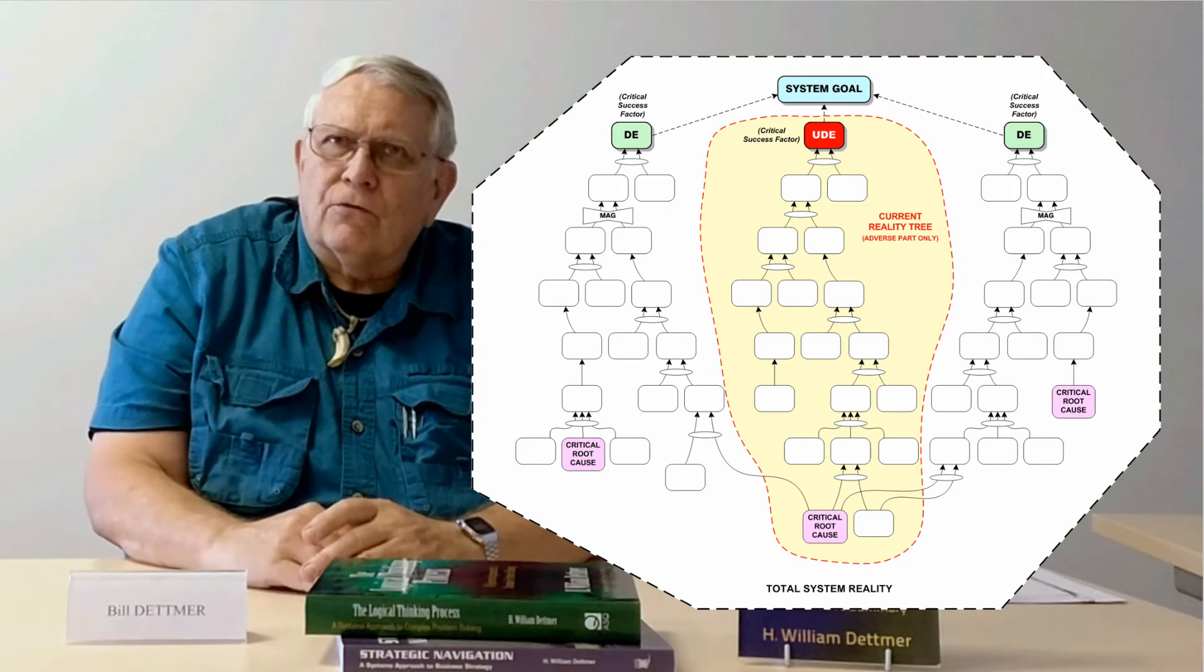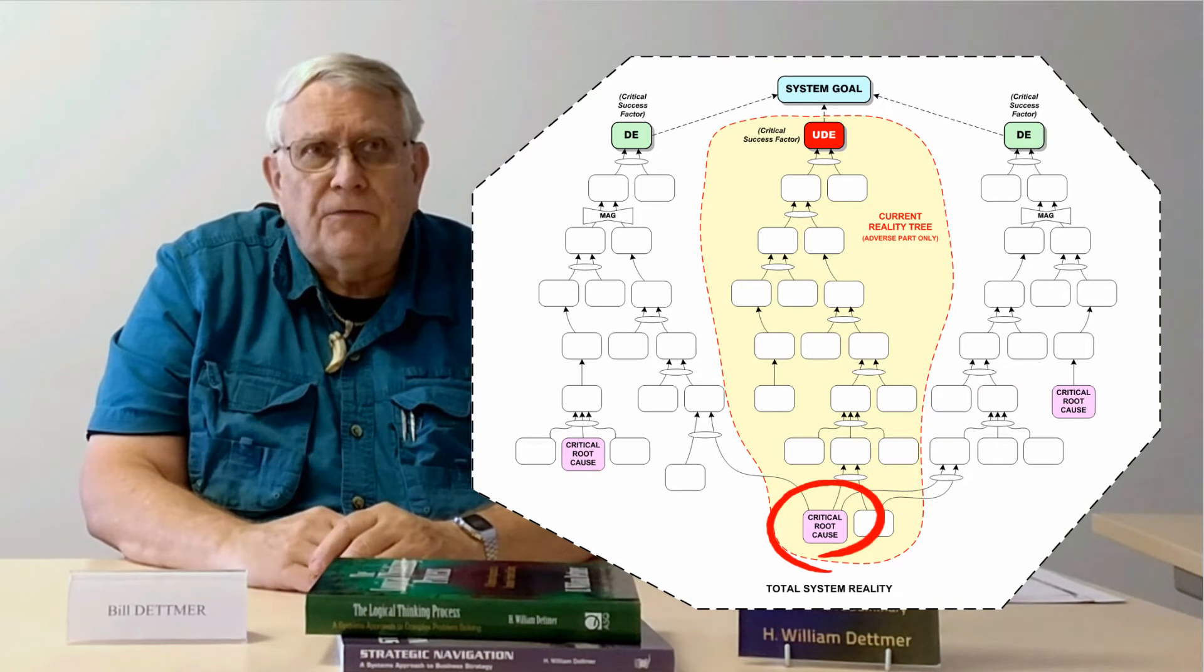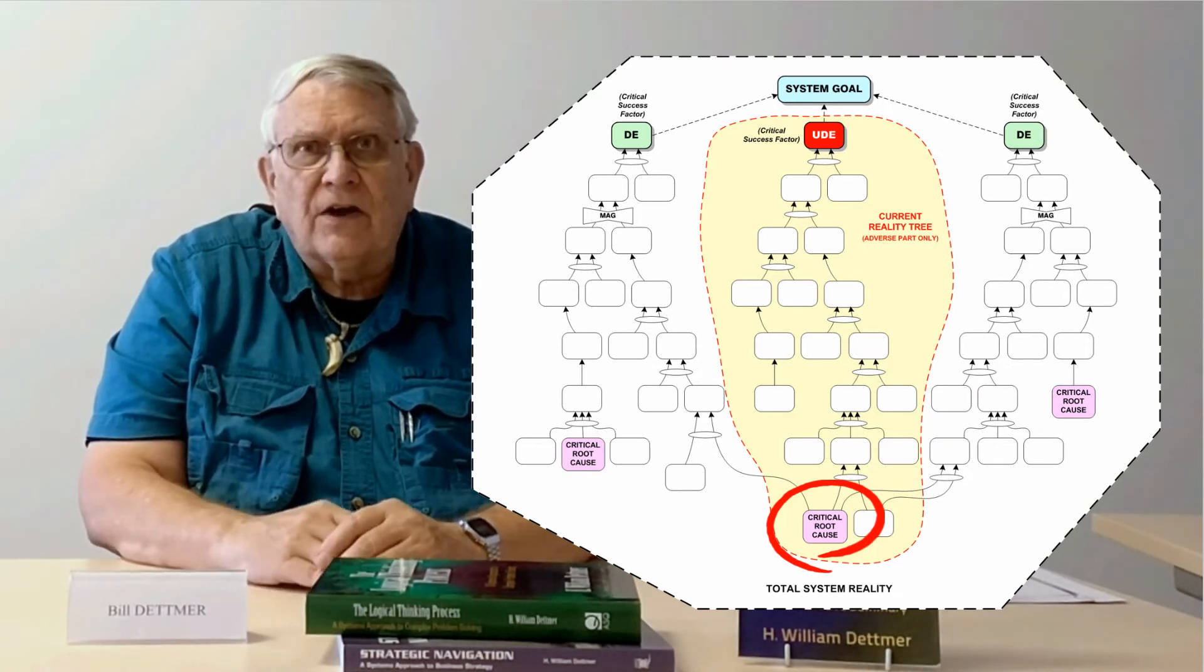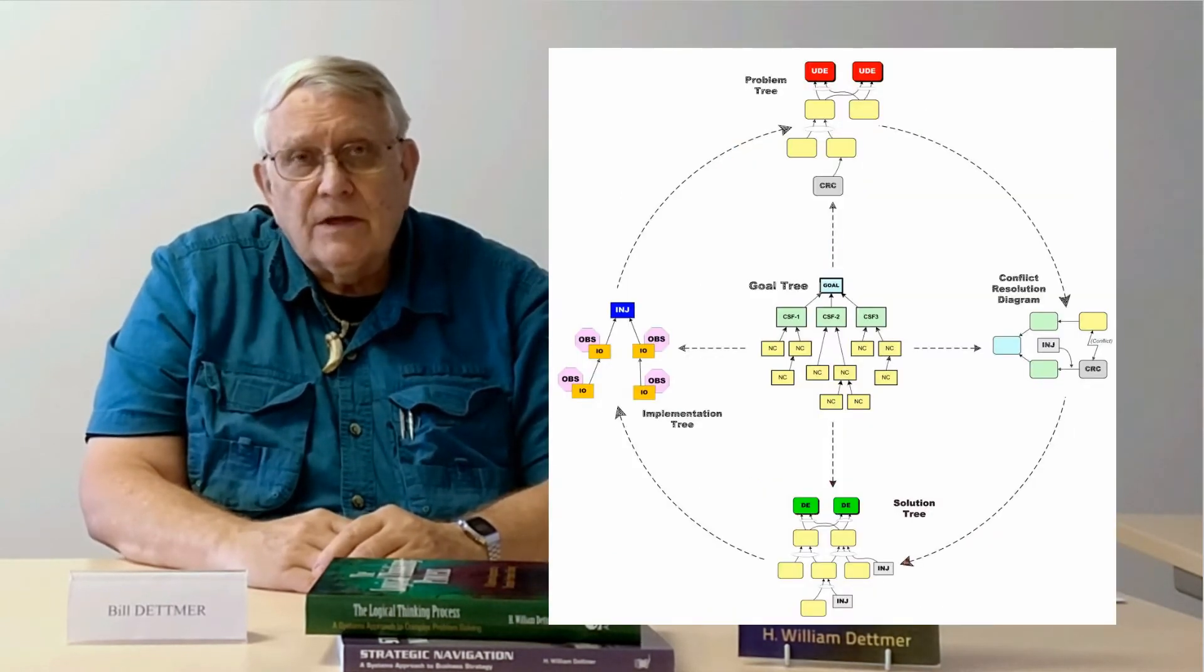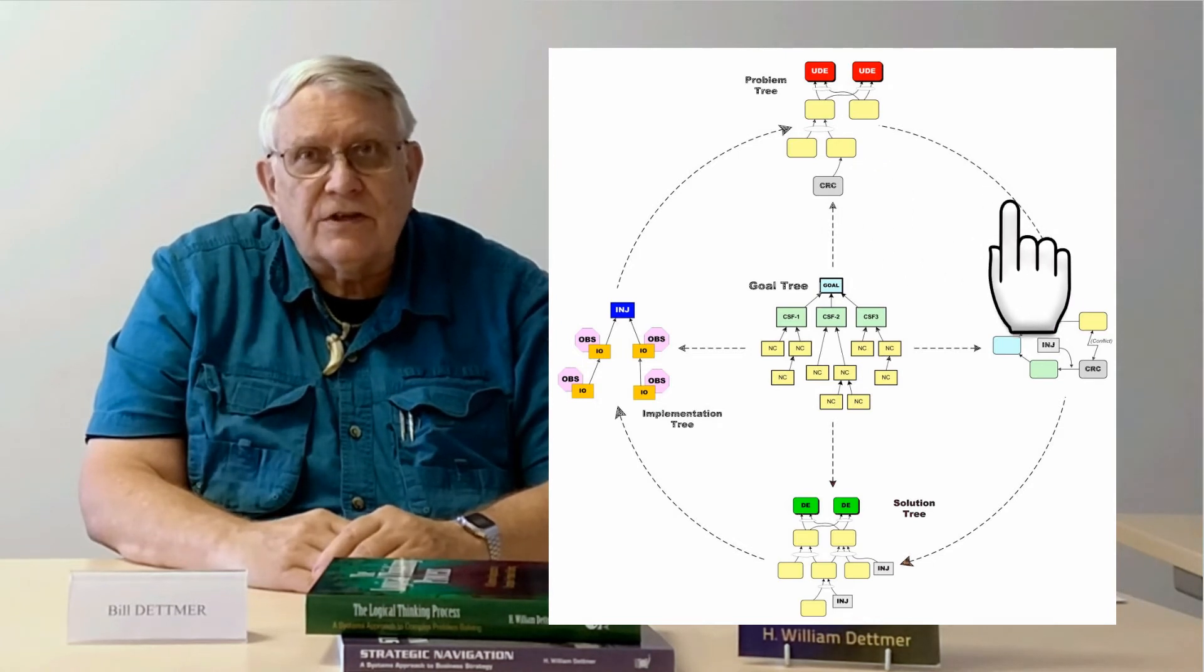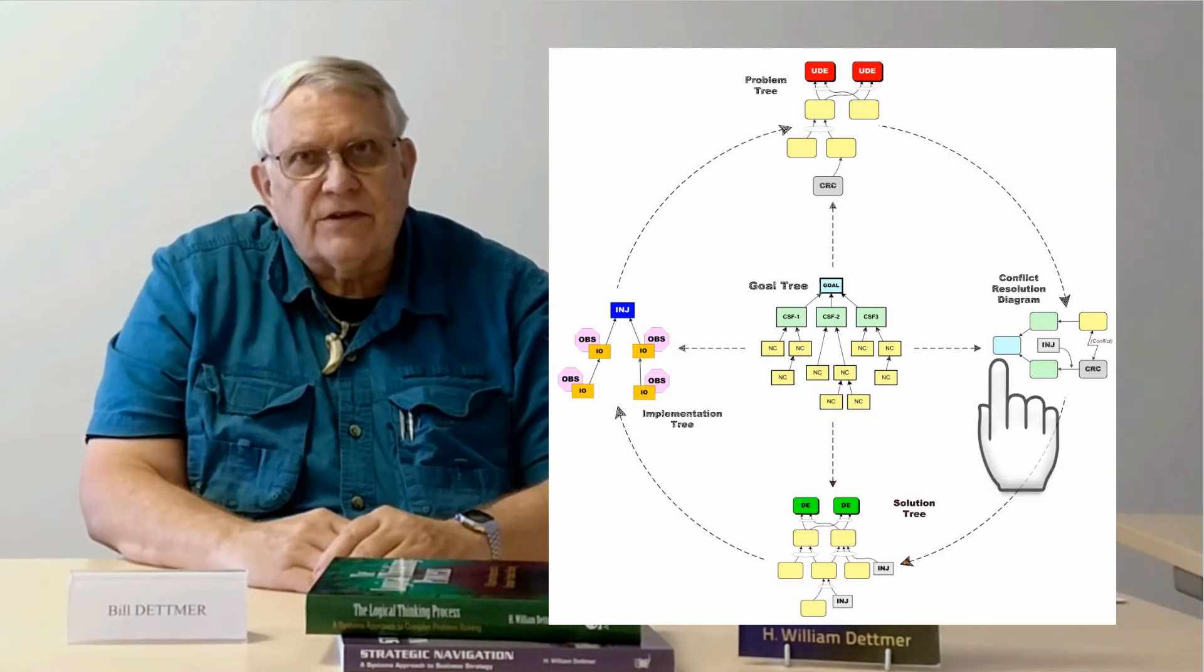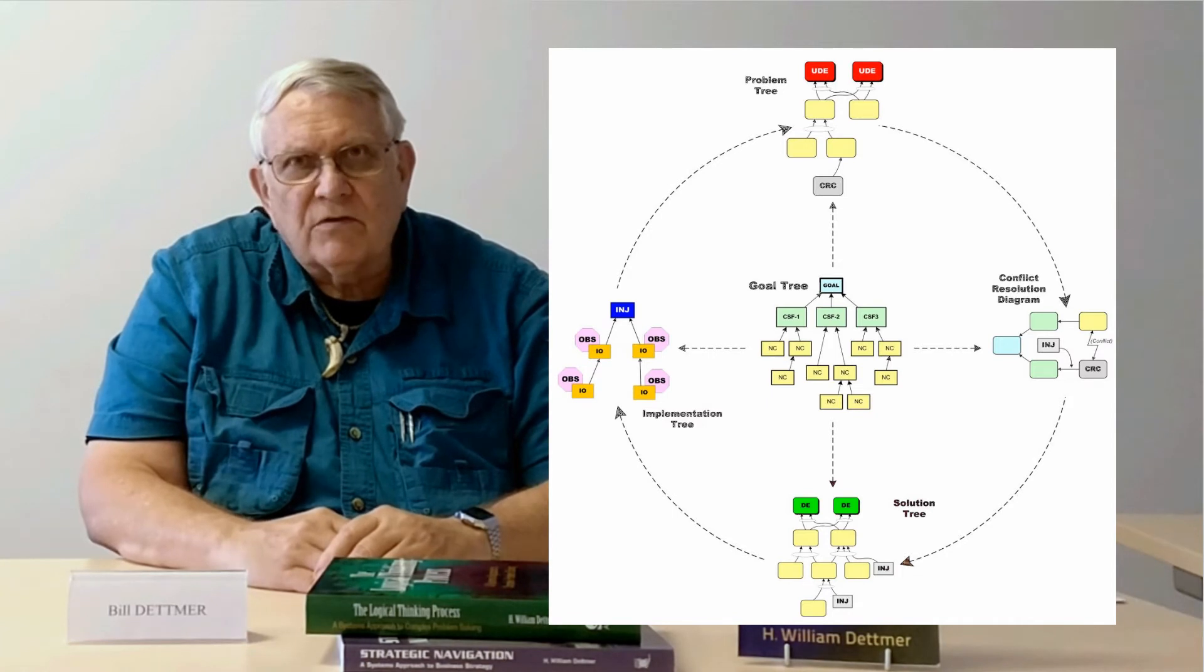Once the critical root causes of the system's failings are identified, and there are usually very few of these, we're in a position to decide whether we'll encounter any resistance in changing the status quo. If so, we proceed to conflict resolution using a tree called an evaporating cloud. This enables us to resolve resistance in a way that constitutes a win for both sides.